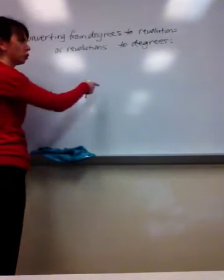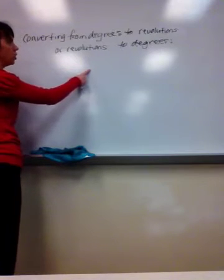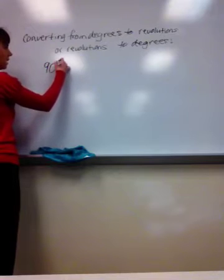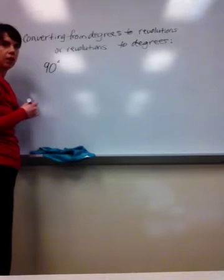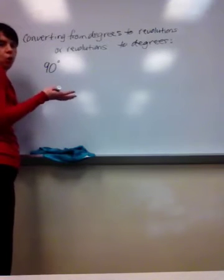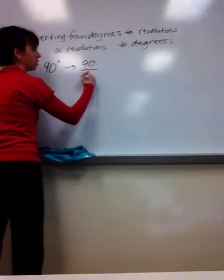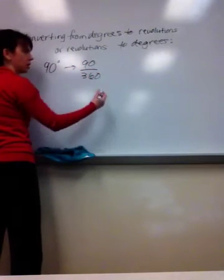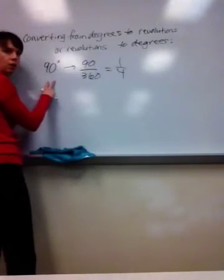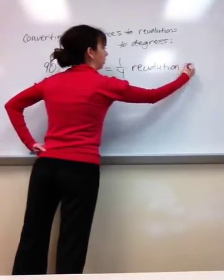First of all, a revolution is a trip around a circle, and there's 360 degrees in a circle. So if, for example, you know that you are at 90 degrees and you need to know how many revolutions that is, 90 degrees is one-quarter of a circle. So you take the 90 degrees, divide it by 360, and that gives you one-fourth. So 90 degrees is the same thing as one-fourth of a revolution.